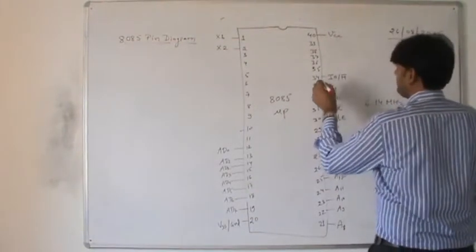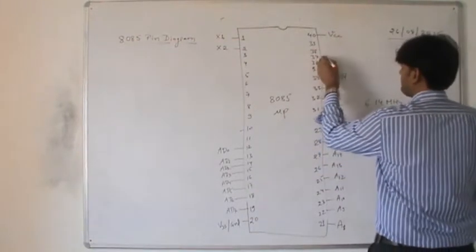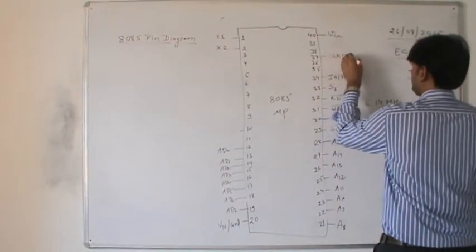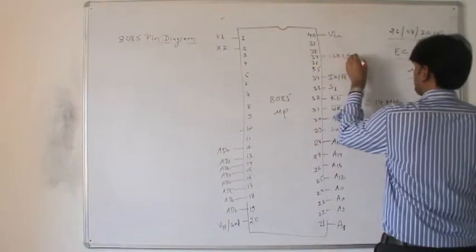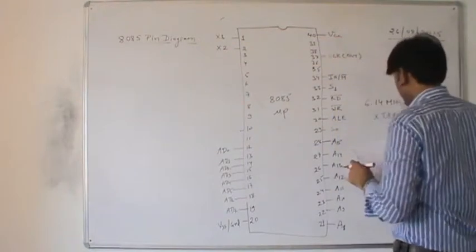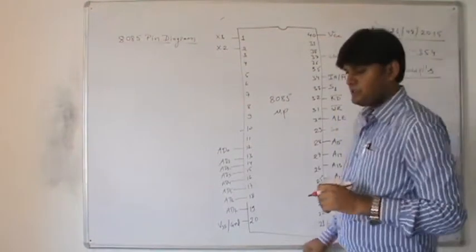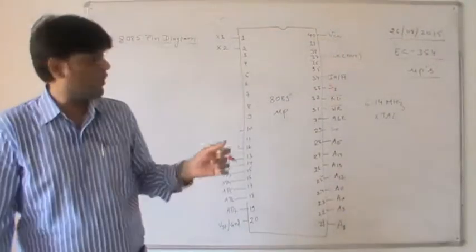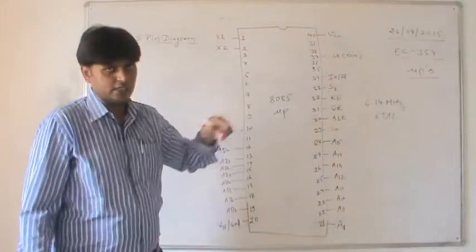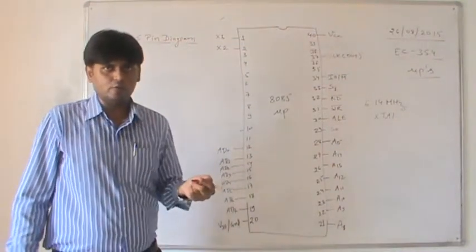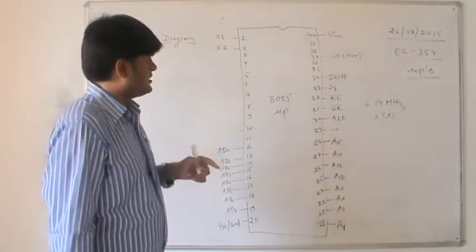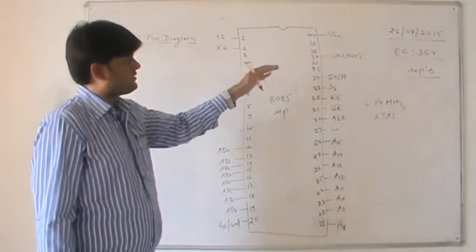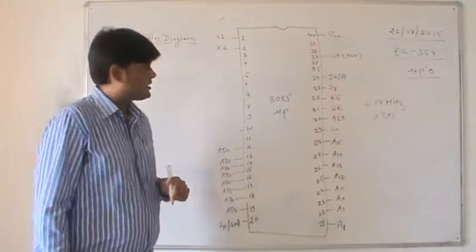On pin number 37 there is a clock out signal. Whatever the input clock received, double that frequency is output from the clock out pin. So if we are inputting 6.14 MHz, double that frequency will be output from clock out.